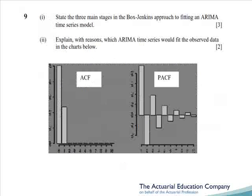Moving on to question 9, and this is the second of our straightforward questions. Part 1 is just book work, where we have to regurgitate the three stages of the Box-Jenkins approach. Part 2 is saying what time series would fit the displayed ACF and PACF. Well the axes may not be clear, but the cut off of the ACF is, so that should present no problem.